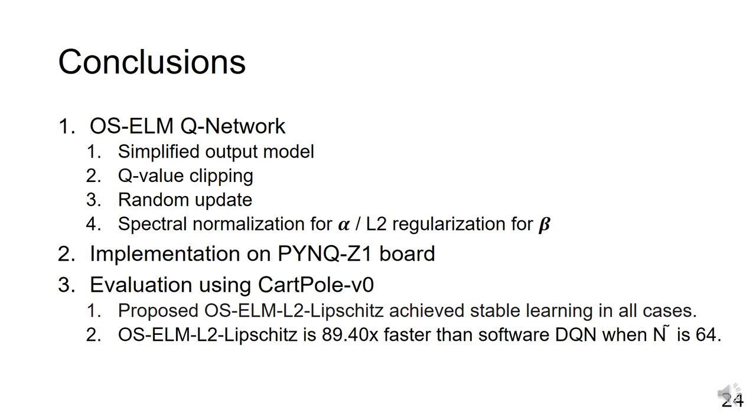The results show that the proposed OS-ELM-L2-Lipschitz performs stable learning for all cases. When N is 64, its FPGA implementation is 89.40 times faster than the original DQN.